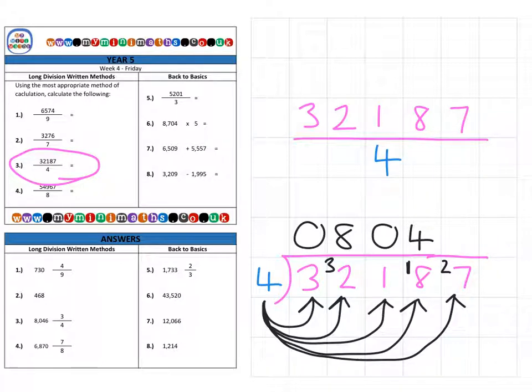How many fours fit into 27? Well, that's going to be six. Four sixes are 24. So that leaves three left over out of the four we're dividing by. So that's the final answer of 8,046 and three quarters.